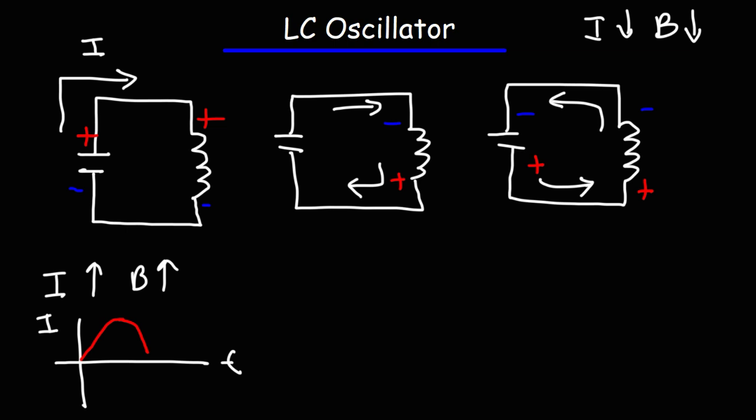And by the way, this is conventional current, not electron flow. Electron flows in the opposite direction, so keep that in mind. So this is situation one, number two, number three. So number three, the current has reversed direction. So the graph is going to be below the x axis.